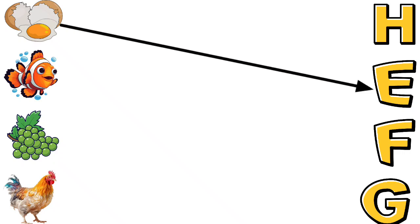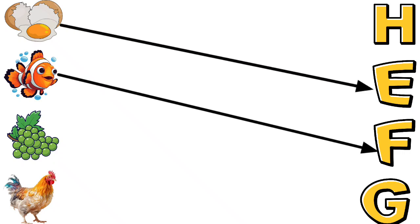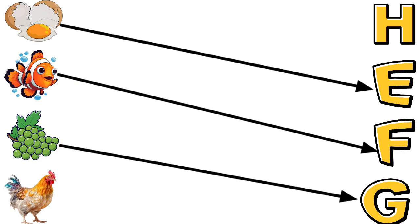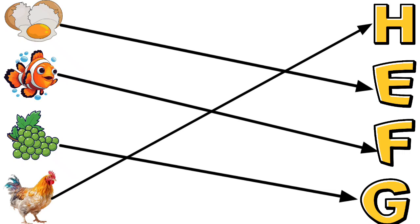E for Egg, F for Fish, G for Grapes, H for Hen.